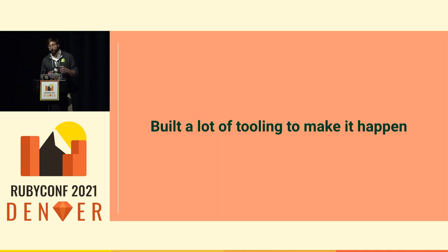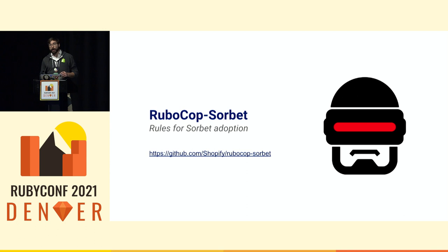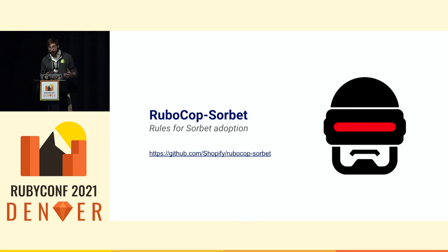To make this possible for all the teams and all the developers to actually use Sorbet, we had to build a lot of tooling around Sorbet itself and contribute to it. Just remember that when we started this journey in January 2019, Sorbet was still having a lot of rough edges. So the first thing we did was create RuboCop Sorbet, which is an open source set of rules for RuboCop that helps with Sorbet adoption. When you have a code base and need to make a few changes to make it Sorbet compatible — for example, changing the const_get calls — you can use RuboCop Sorbet to automate those changes with autocorrect and go faster in your adoption.